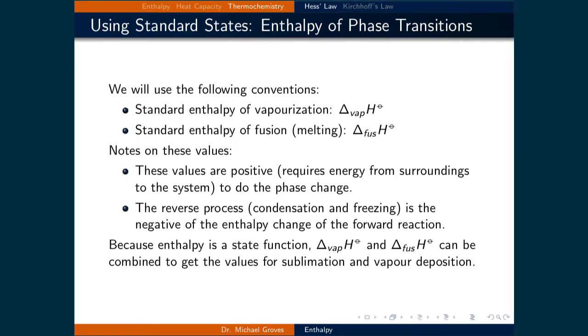We will use the following conventions. In terms of notation, the standard enthalpy of vaporization is denoted as delta sub vap H°, and the standard enthalpy of fusion is denoted as delta fus H°. Following our sign convention, when these values are positive, this means that energy is transferred from the surroundings to the system, and the substance is melting or boiling.